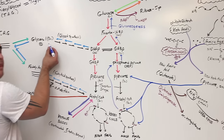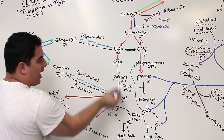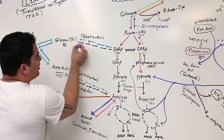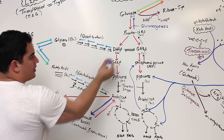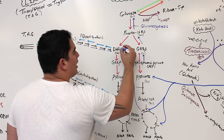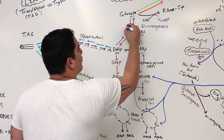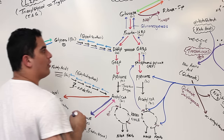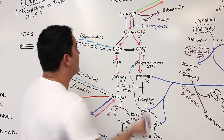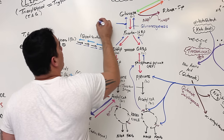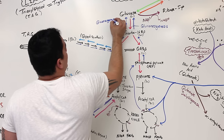Remember the glycerol? This glycerol can be converted into dihydroxyacetone phosphate, which can get converted into fructose-1-phosphate, and then from fructose-1-phosphate it can be converted into glucose. What is that called? It's called gluconeogenesis.